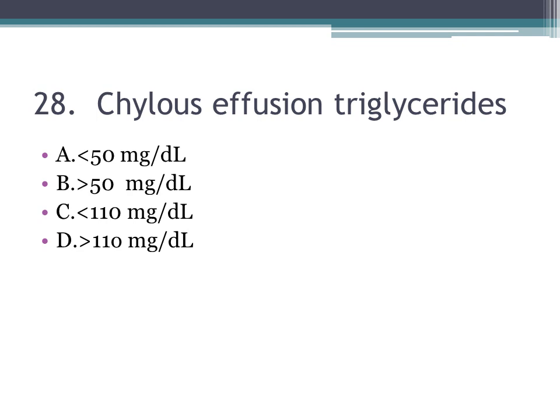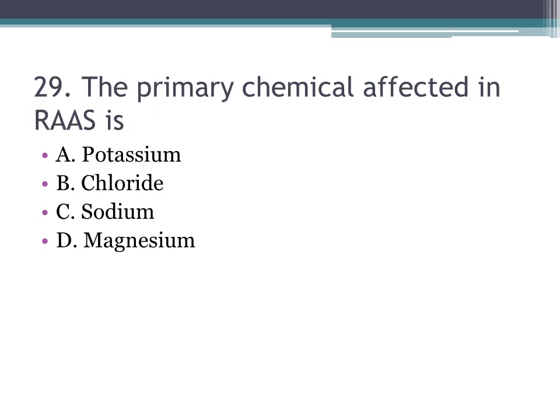Number twenty-eight: chylous effusion triglycerides — how much triglycerides are found in chylous effusion? A. less than 50 mg/dL, B. greater than 50 mg/dL, C. less than 110 mg/dL, D. greater than 110 mg/dL. The correct answer is D, greater than 110 mg/dL.